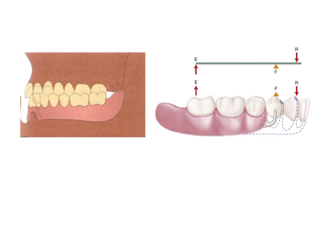Now what is the heel of the mandibular cast partial denture? The heel is this portion — the part of the denture that covers the retromolar pad. Now it can interfere with a lot of things, especially the maxillary tuberosity. This upward lifting of the cast partial denture is called the heel raising effect.